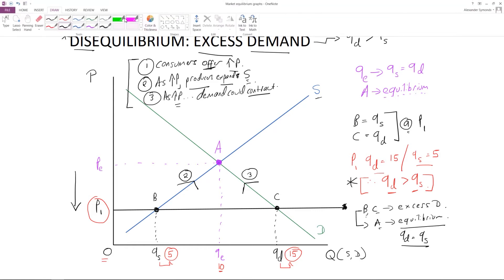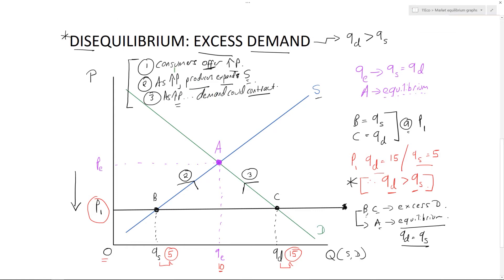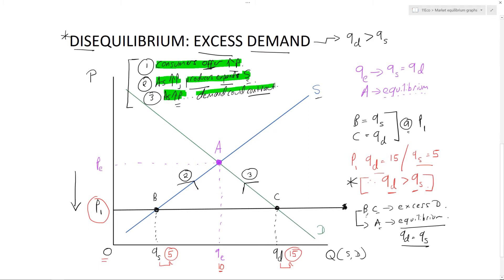To go over it one more time: when we start at disequilibrium with excess demand, consumers offer higher prices because they don't want to miss out. As price goes up, that's a signal telling producers to expand supply — there's too much demand and they can make extra money. But as price rises, not all consumers can afford it and demand contracts. That level of demand shrinks and we return to point A and a situation of equilibrium.